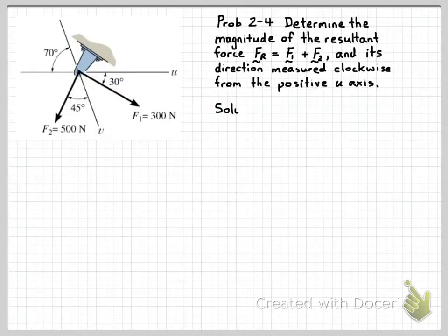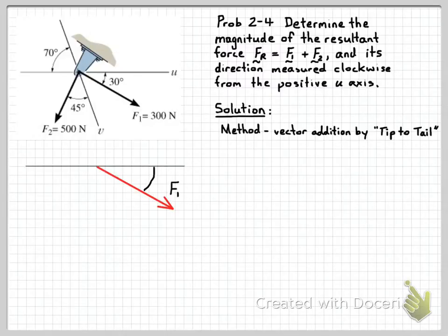In this solution, we'll use the method of adding our vector forces via the tip-to-tail method. We'll start our solution by drawing the vector force F1. So we need to move the tail of force F2 over to the tip of force F1.